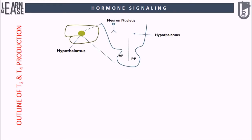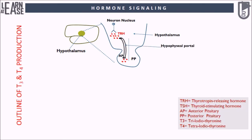The neuron nucleus located in the hypothalamus produces thyrotrophin releasing hormone, abbreviated as TRH. TRH travels to the anterior pituitary through a special type of venous system known as the hypophyseal portal. The anterior pituitary has special endocrine cells known as thyrotrope cells which detect TRH and get activated. The activated thyrotrope cells produce a glycoprotein molecule known as thyroid stimulating hormone, abbreviated as TSH. TSH produced by thyrotrope cells is poured into the blood.